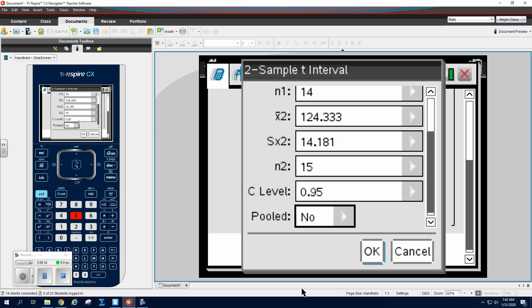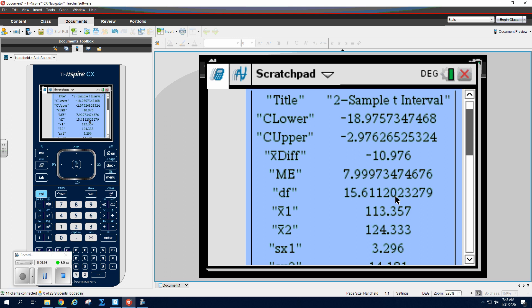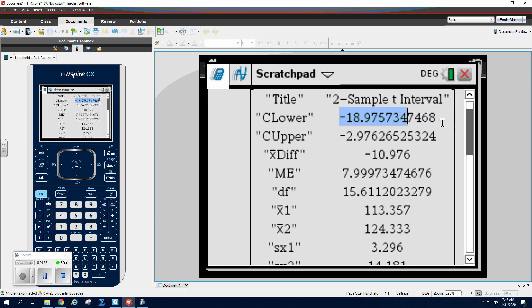And we're good to go here. So here's my answer. There's my confidence interval, and the other thing that you have to write down is the degrees of freedom. All right, so be sure you write down your degrees of freedom.